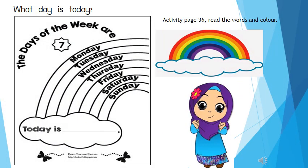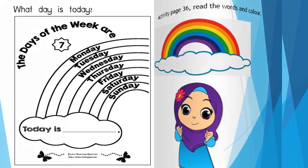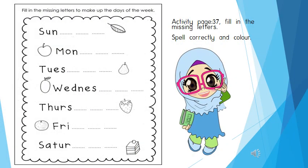What day is today? For activity page 36, read the words and color. For activity page 37, fill in the missing letters to make up the days of the week, spell correctly, then you can color the picture.